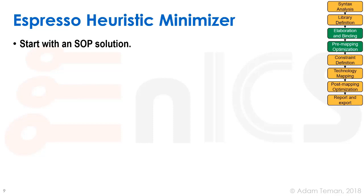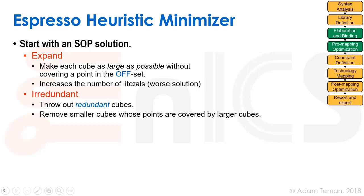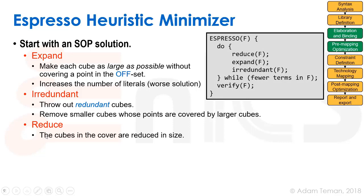The Espresso heuristic minimizer is the primary tool used for two-level logic minimization. It starts with the sum-of-products solution and takes three steps. First, Expand: make each cube as large as possible without covering a point in the offset — this generally increases the number of literals, so we get a worse solution. Then, Irredundant: look for redundant cubes and throw them out, removing smaller cubes whose points are covered by larger cubes. Finally, Reduce: the cubes in the cover are reduced. So Espresso is Expand, Irredundant, and Reduce.